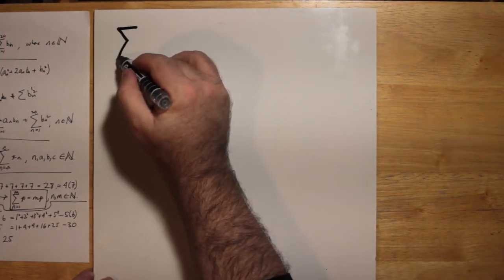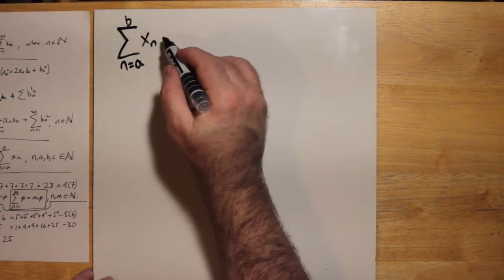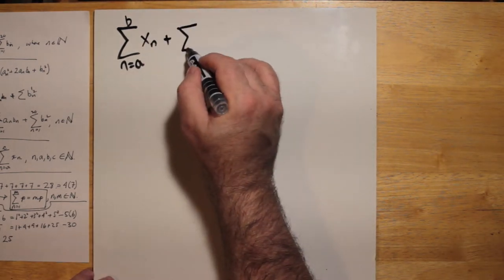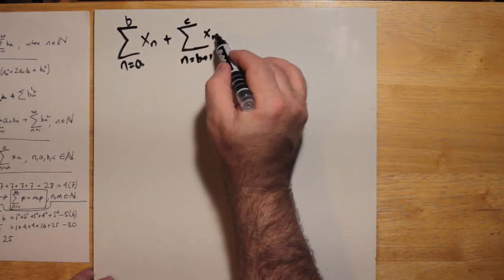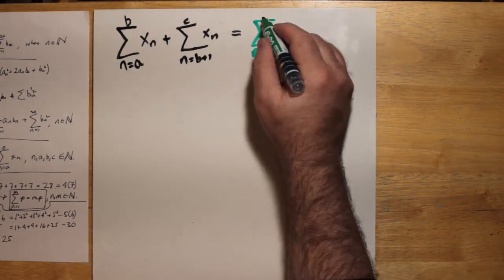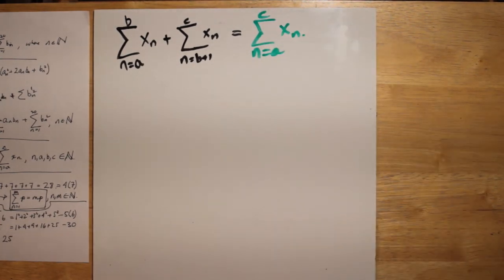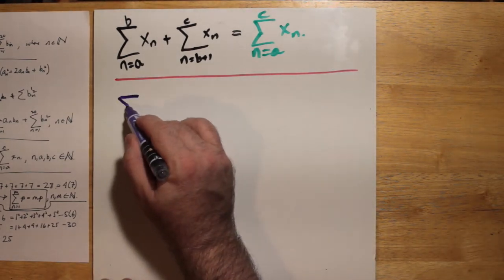Once again, we're breaking up two sums, but this time, notice that the upper and lower limits are a little peculiar. The first sum goes from a to b and the next sum goes from the next integer above b or b plus 1 up to c. This is the same thing. As long as the formula in front of the sum are the same, then this is the same thing as saying n equals a up to c.